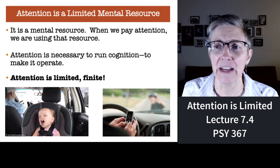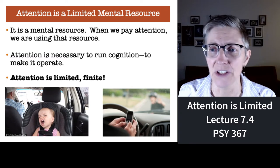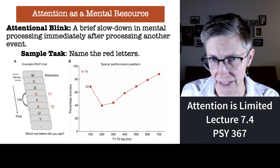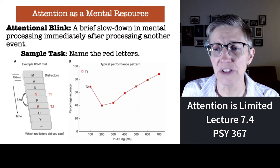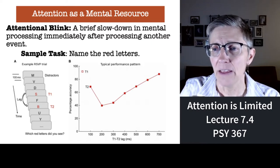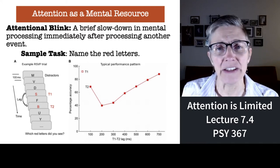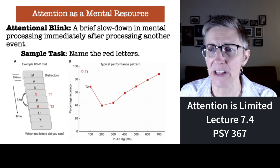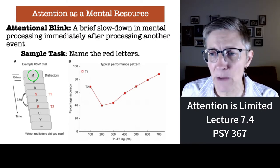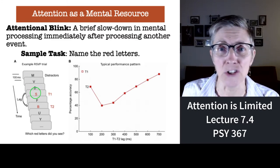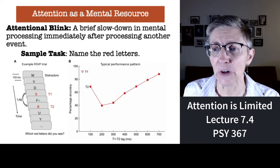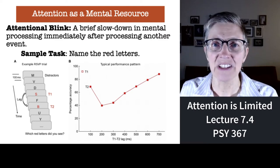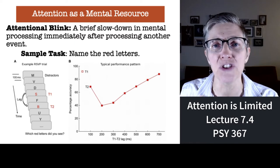Attentional blink is a brief slowdown in the processing of information immediately after you've paid attention to something else. The diagram here shows you an example. On the left-hand side, you see individual screens from a computer, and there is a letter on each screen, presented very, very briefly. You're asked: what is the red letter? So maybe the first letter you see is M, then V, then D, then you see a red S — that's your target. Then there's a black F, and shortly thereafter, a red B. So it turned out there were two red letters. But according to attentional blink, the attention you use to detect the first red letter should make you less able to detect the second red letter.